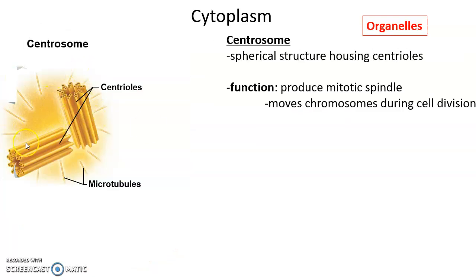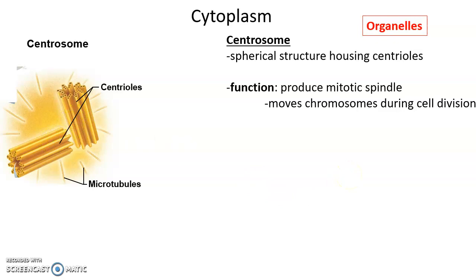Centrosomes are a specialized organelle that produces part of the cytoskeleton — specifically, the mitotic spindle. The mitotic spindle is very important during cell division; it is the structure that moves the chromosomes. Centrosomes have two centrioles and are involved in producing the mitotic spindle to move chromosomes during cell division.